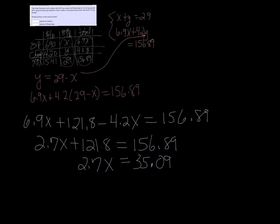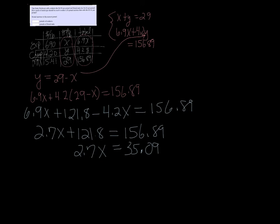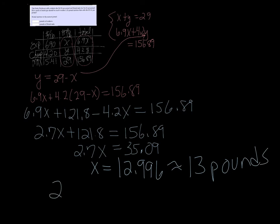Now it says round to the nearest pound. When I do this division here, I get that X is 12.996. Well, that's pretty much 13 pounds. So if I need 13 pounds of the expensive, then 29 subtract 13 will give me the number of cheap. So that's going to be 16 pounds of the cheap. And that's it.